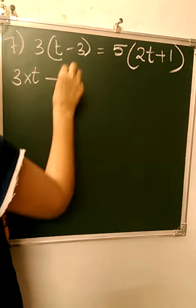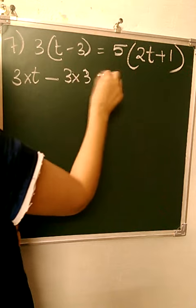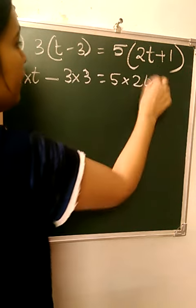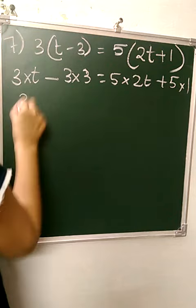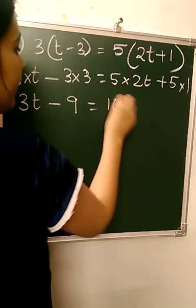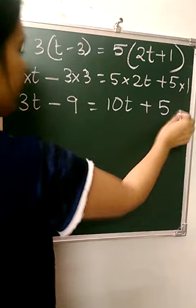3 into t minus 3 into 3, then 5 into 2t plus 5 into 1. This gives us 3t minus 9 equals 10t plus 5.